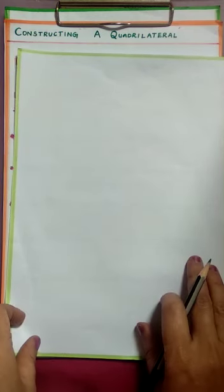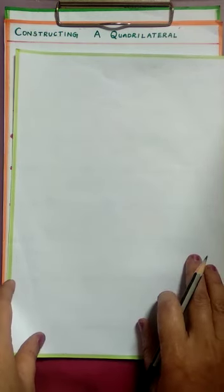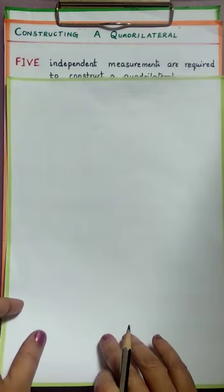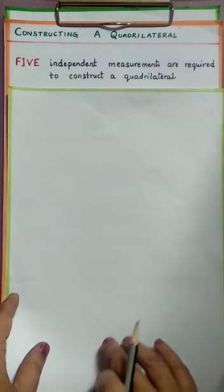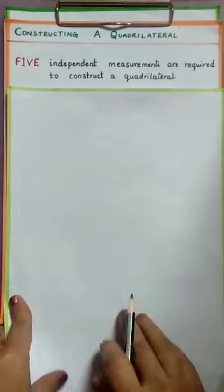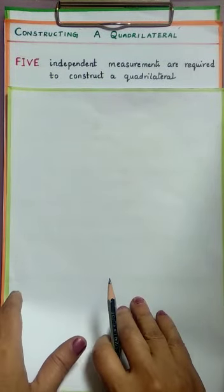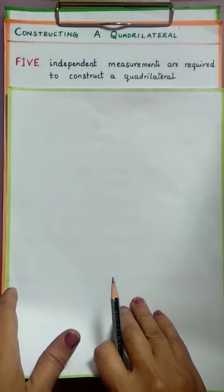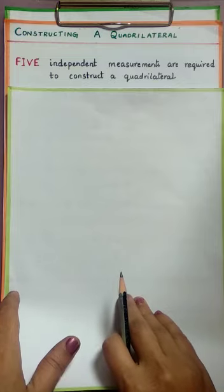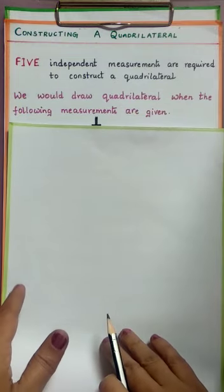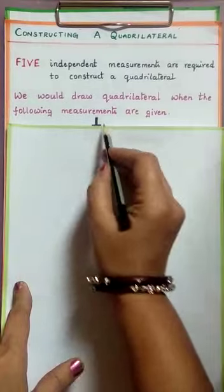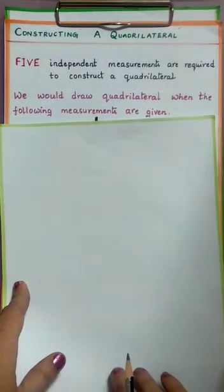Construction needs some information — then only a perfect quadrilateral can be constructed. 5 independent measurements are required to construct a quadrilateral. The information can be provided in 5 different forms, and we would draw a quadrilateral when the following measurements are given.